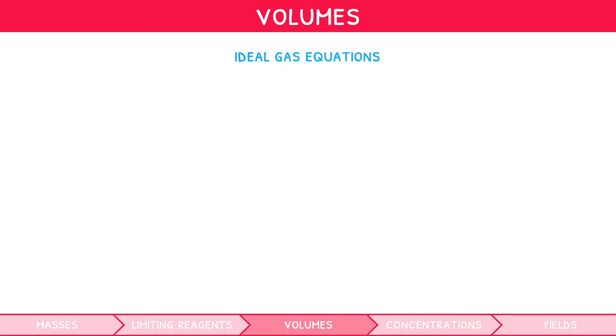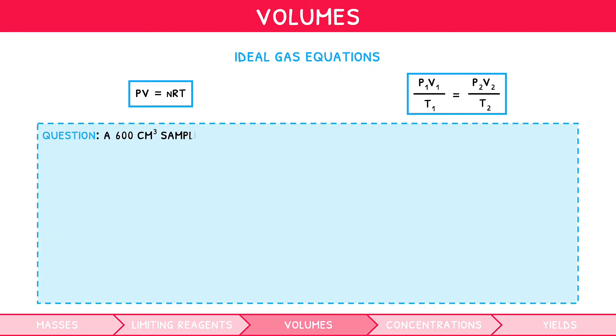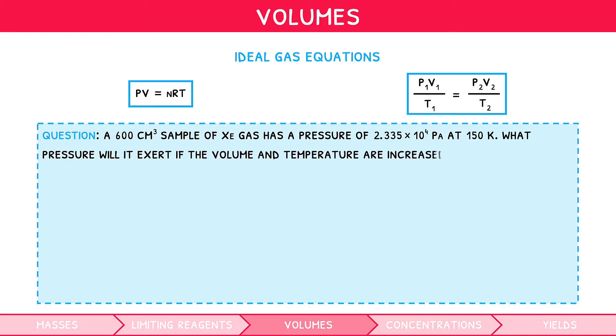We have previously mentioned the two ideal gas equations that also relate to volume. PV equals NRT, and P1 times V1 over T1 equals P2 times V2 over T2. To explore these equations, let's look at two distinct examples. A 600 centimetre cubed sample of Xeon gas has a pressure of 2.335 times 10 to the 4 pascals at 150 Kelvin. What pressure will it exert if the volume and temperature are increased to 0.8 DM cubed and 200 Kelvin? The equation to use here is P1 times V1 over T1 equals P2 times V2 over T2. Remember, in this equation, the units for pressure and volume do not matter, as long as they are the same on both sides of the equation. However, temperature must be in Kelvin. After some rearranging, we can see the pressure will be 2.33 times 10 to the 4 pascals.